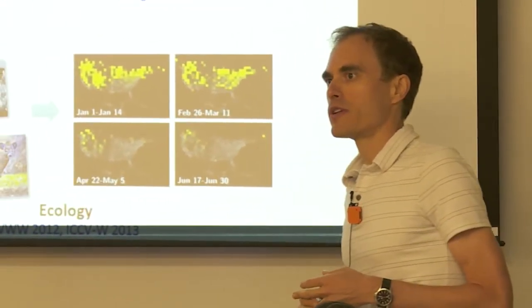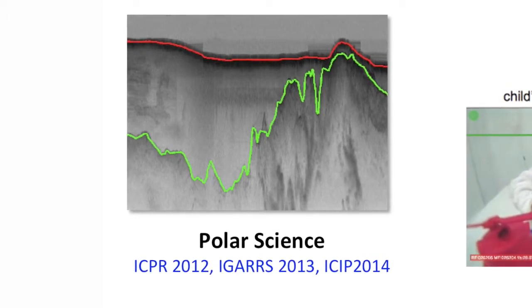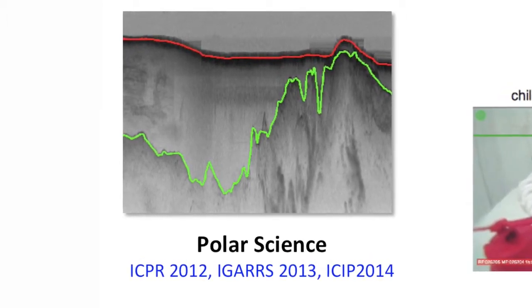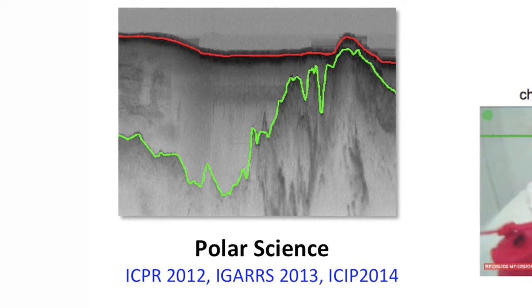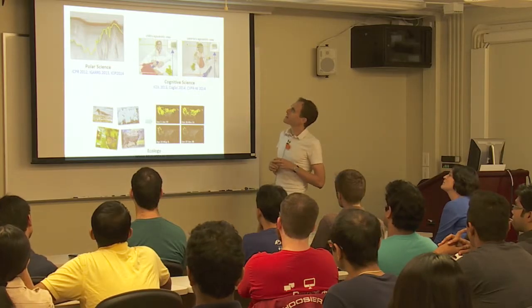We're also really excited about interdisciplinary applications and collaborations. To give a couple of examples, with Professor Jeffrey Fox and others we're working on understanding automatically imagery taken from polar science, from the polar ice sheets to monitor how climate change is affecting the ice automatically.